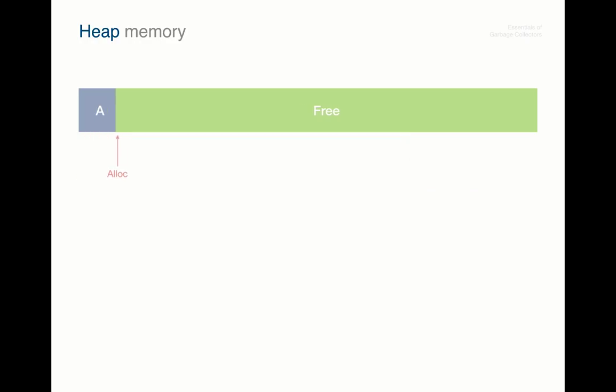Now let's allocate an object graph on this heap. So we allocate object A, pointed by the root, and a root is a known reachable reference, such as a variable or a register. From a user code perspective it may look like this. Alright, so we allocated the object A and assign it to the root variable.